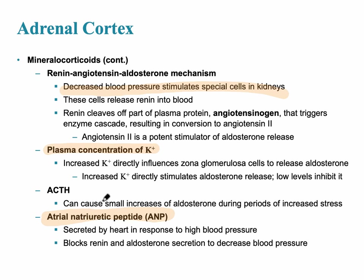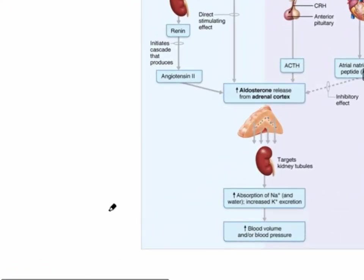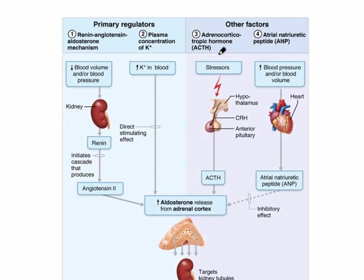There are several hormones that affect blood pressure. Most of them increase blood pressure: aldosterone because it reabsorbs sodium, ADH because it increases water to increase blood volume, and angiotensin II which is a vasoconstrictor. The one that decreases blood pressure is atrial natriuretic peptide (ANP), which is secreted directly by the atrial cells in the heart. The primary regulators of aldosterone are the renin-angiotensin-aldosterone system, the concentration of potassium, ACTH, and ANP.